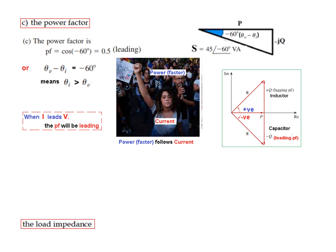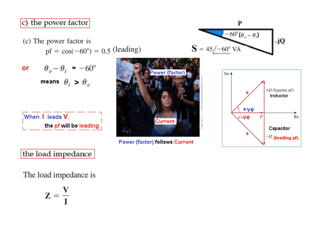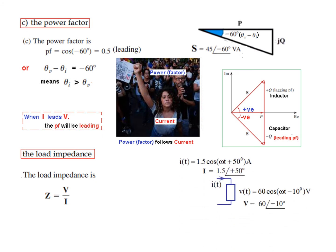For load impedance Z = V phasor / I phasor. Converting the sinusoidal values to phasor form and dividing: Z = 40∠−60°. Since the angle is negative, this is a capacitive impedance.